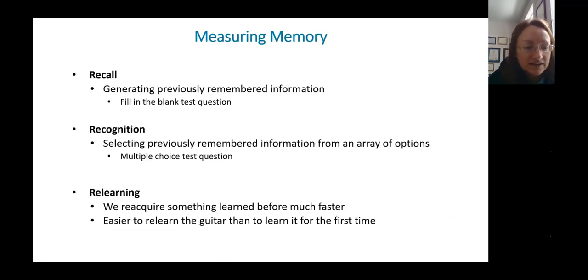There are three ways that psychologists assess memory. They're called the three R's. There's recall, recognition, and relearning. Recall refers to your ability to generate the previously remembered information. A practical example of that is a fill-in-the-blank test question. You have to pull that term that you learned out of your memory bank. That's harder than recognition. In recognition, you select the previously remembered information from an array of options. And a good practical example of that is a multiple-choice test question.